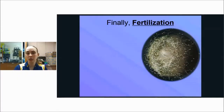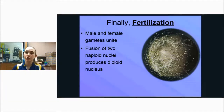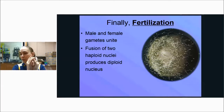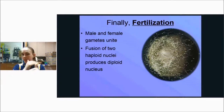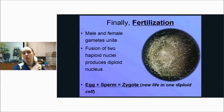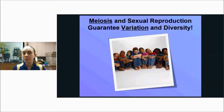Fertilization is when the male and female gametes unite. The fusion of two haploid nuclei forms a diploid nucleus: 23 chromosomes from the sperm and 23 from the egg join together, making a full set of 46 chromosomes — one from each parent — in a diploid cell. That fertilized egg is called a zygote — a new life in one diploid cell — and it will go through mitosis and division to start becoming you. It's amazing that we all start as just one cell and become 1.2 trillion cells.